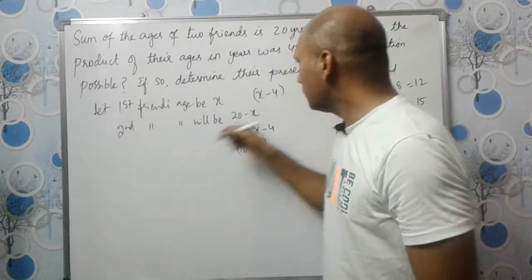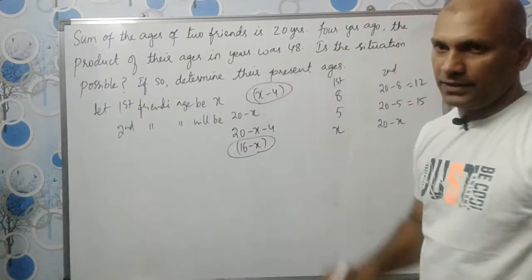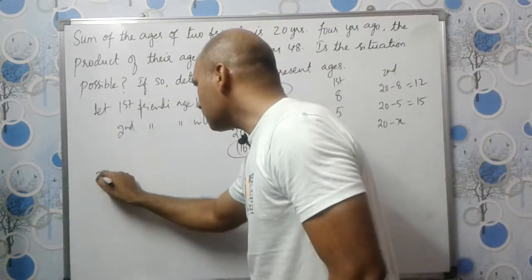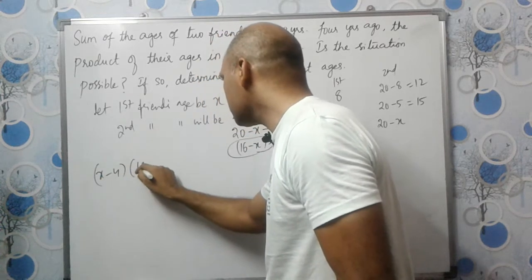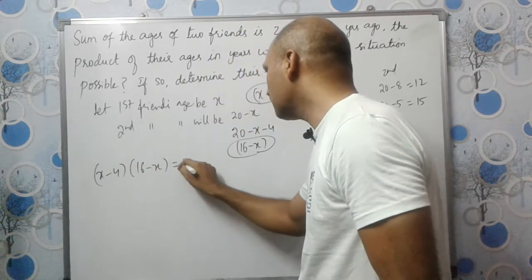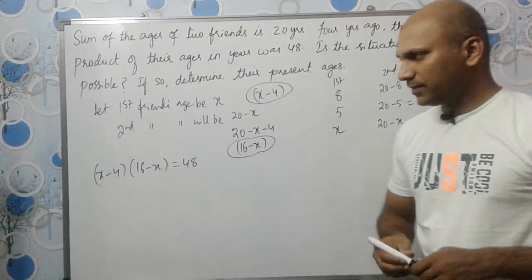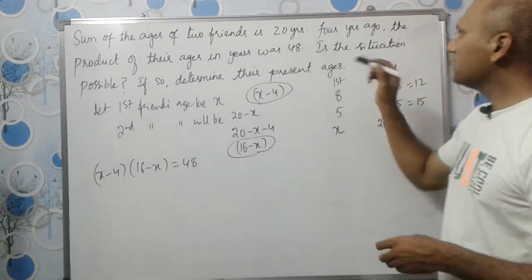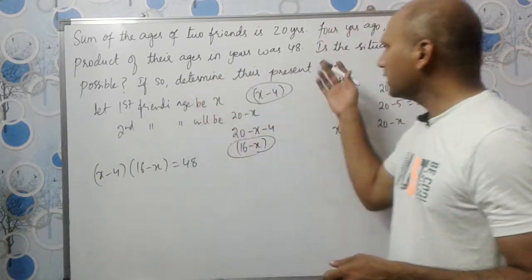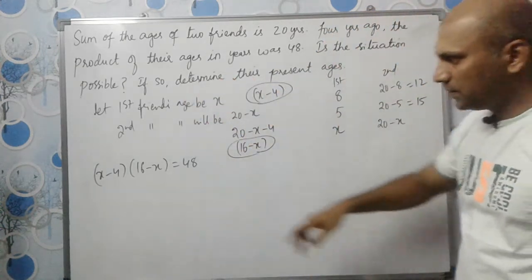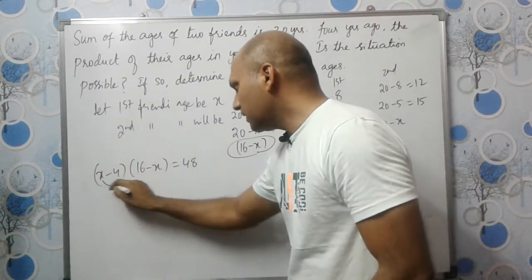It is given that 4 years ago the product of their ages was 48. So (X minus 4) multiplied by (16 minus X) is equal to 48. The question also asks: is this situation possible? If so, determine the present ages.